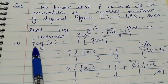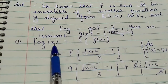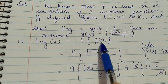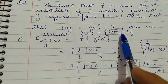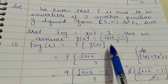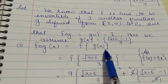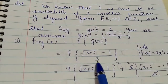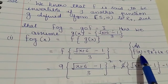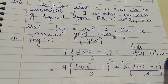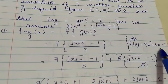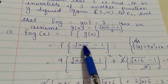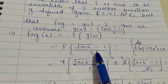First we find f composition of g(x). This equals f(g(x)). Since g(x) = (√(x+6) - 1) / 3, this becomes f((√(x+6) - 1) / 3). We know f(x) = 9x² + 6x - 5, so we replace x with (√(x+6) - 1) / 3.